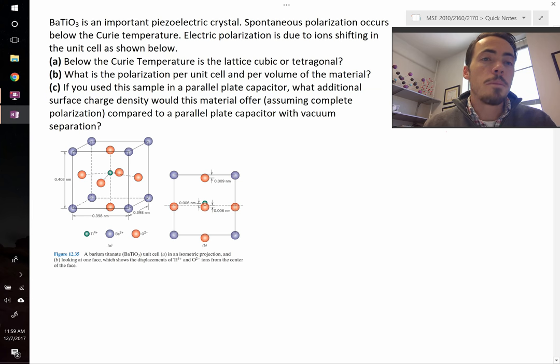Okay, this question states barium titanate is an important piezoelectric crystal. We are reminded that spontaneous polarization occurs below the Curie temperature, and we know that this polarization is due to ions shifting in the unit cell. Part A then asks, is the Curie temperature, below the Curie temperature, is this going to be a cubic lattice or tetragonal?